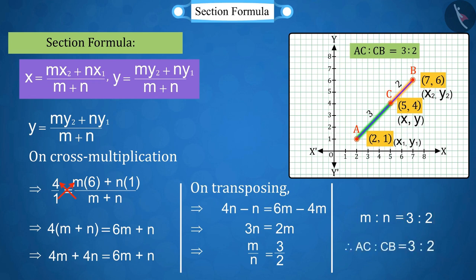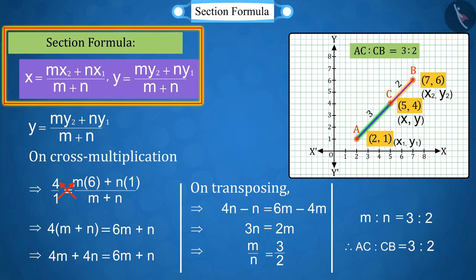That's right. It is correct. Using the point Y from the section formula, the value of M ratio N as 3 ratio 2 is what we get. So we can say that from any point in the section formula, the value of M ratio N can be determined.